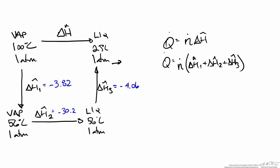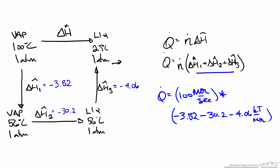Scrolling down, the hypothetical path is redrawn showing the results from the sensible and latent heat calculations, which we use to calculate our cooling duty. Our energy balance is Q equals Ṅ times the sum of each specific enthalpy change. Plugging in values with a molar flow rate of 100 mol/s and the three enthalpy changes, we get a final cooling duty of negative 3808 kJ/s. The negative sign makes sense because we are withdrawing energy from the system, and we can see from the hypothetical path that most of the cooling duty is associated with the change in phase.